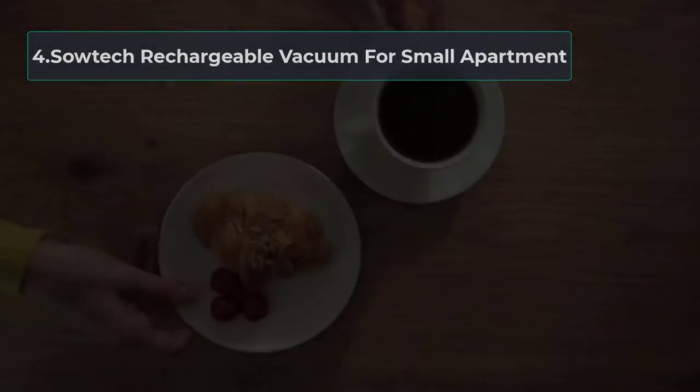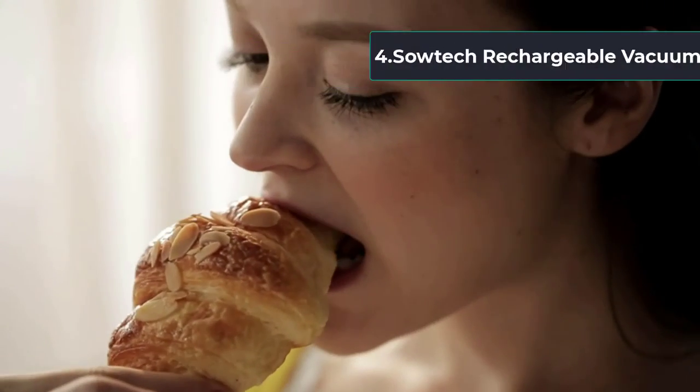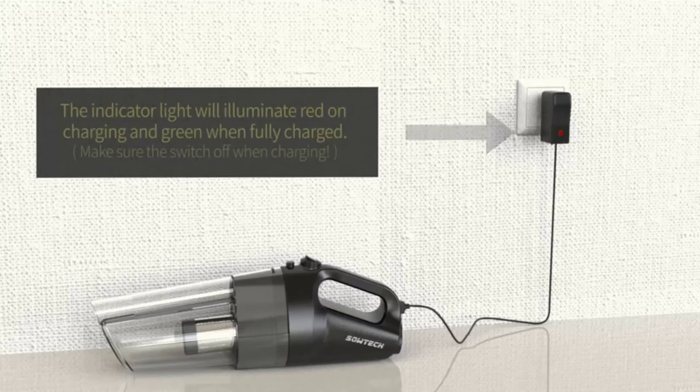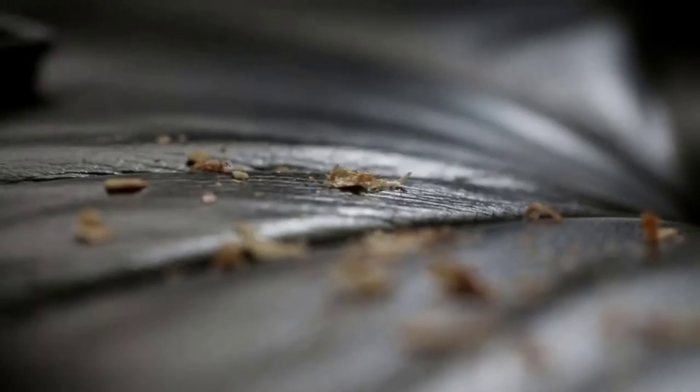At number four: Sotech Rechargeable Vacuum for small apartment. I call the Sotech Rechargeable Vacuum best for hard floors since it is equipped with a floor brush and is expert in non-scratching floors. Plus, its battery runtime is more than 40 minutes, so that you can clean your entire small apartment without recharging.